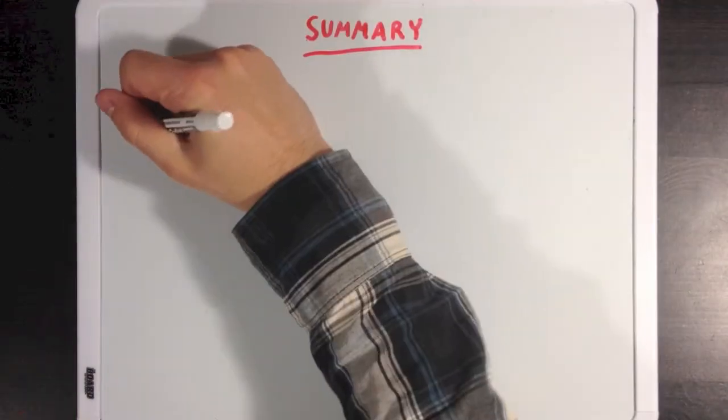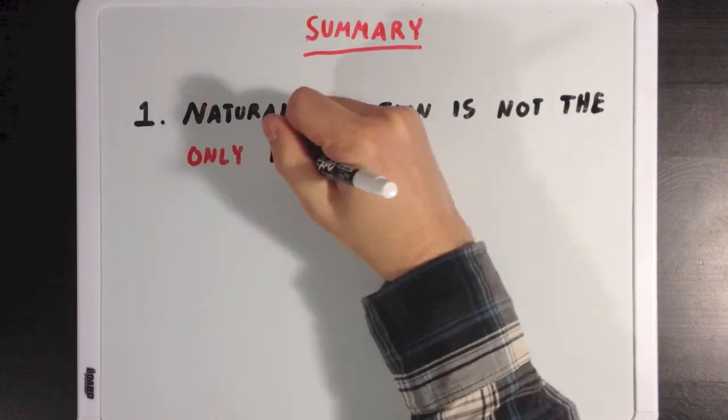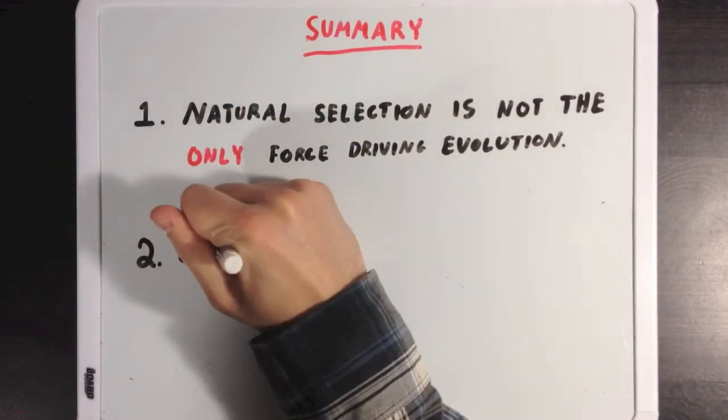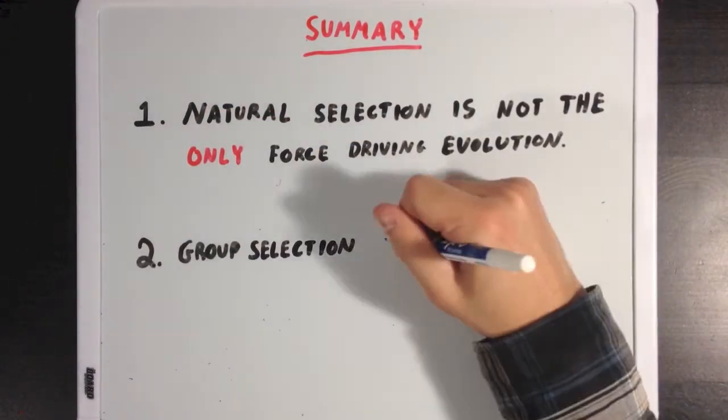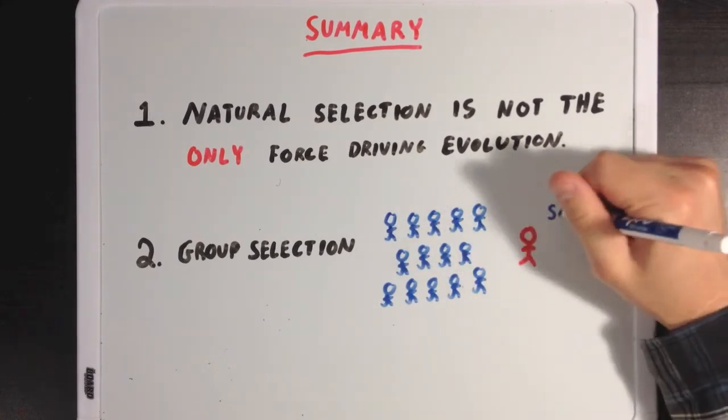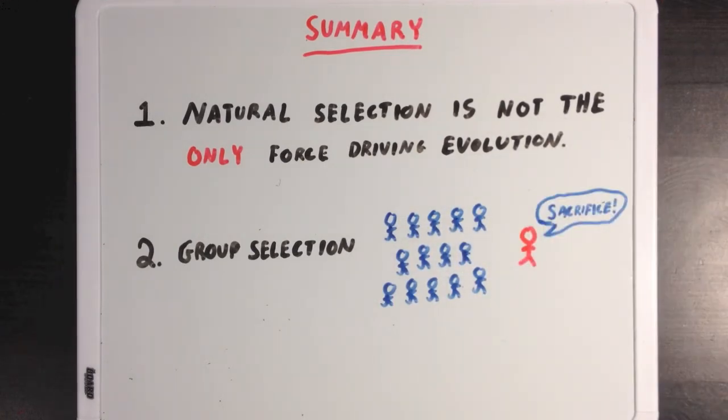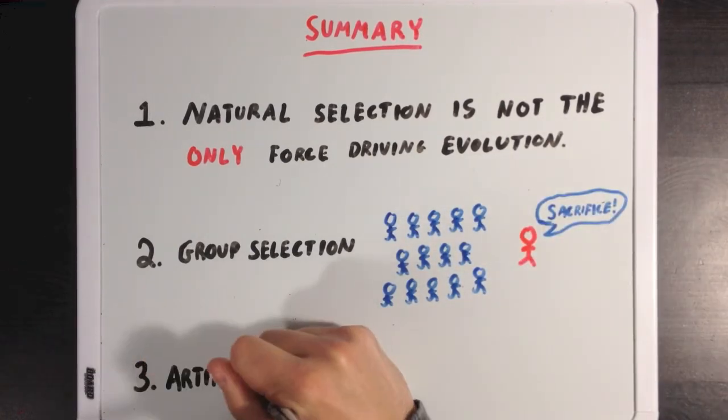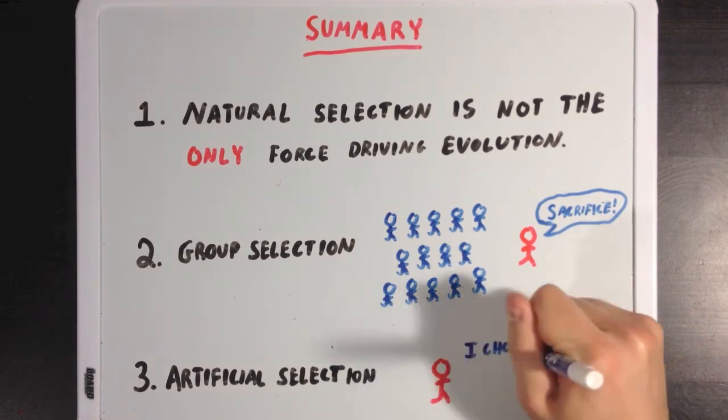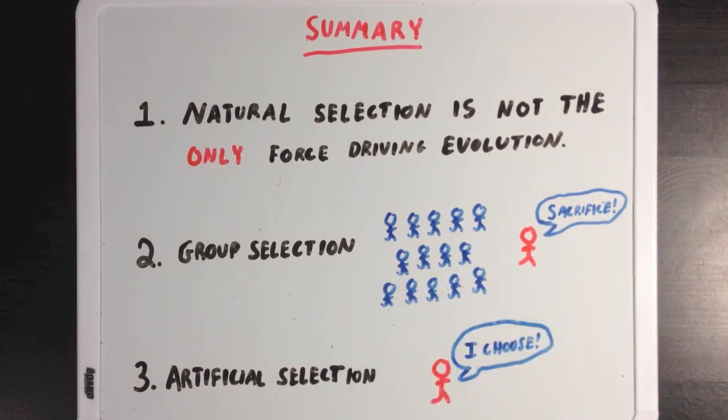So what did we learn? Well, first we learned that natural selection is not the only force driving evolution. We have group selection, which is the idea that traits benefiting the group over the individual with the trait can still be selected for. And we also talked about artificial selection, which is where an outside individual can literally choose which traits in a given population will be passed on, instead of that selection occurring naturally.